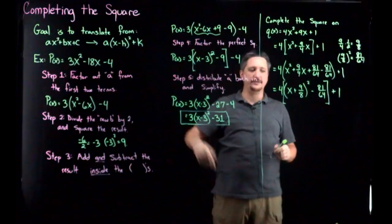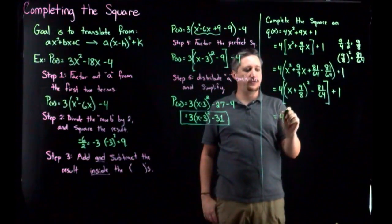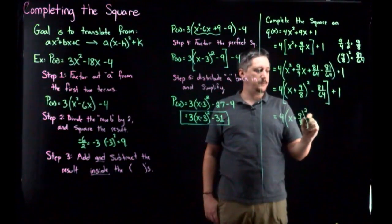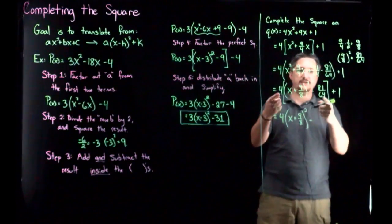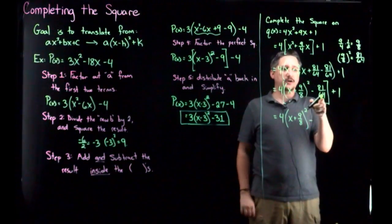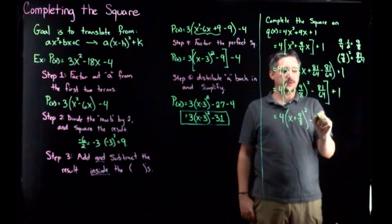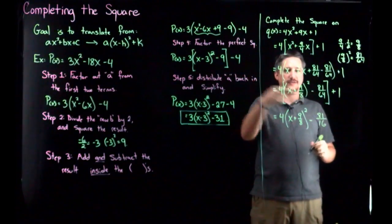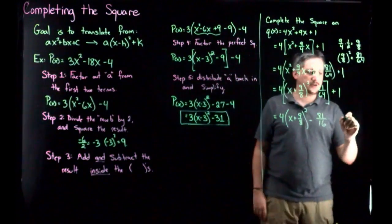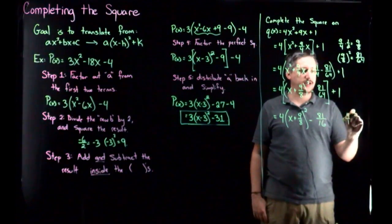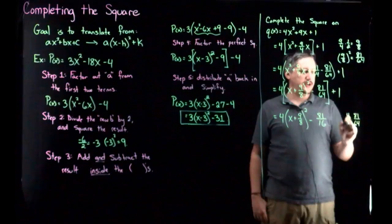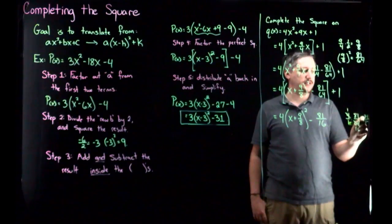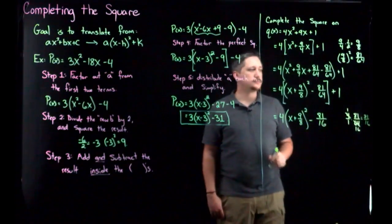So I have to distribute the four back in and simplify. So I'm going to get four times (x plus nine eighths) quantity squared minus, so four times this. Usually if it's a fraction there'll be some cancellation. So four can cancel a four in the bottom here. So I'm actually going to get 81 over 16. So that's doing the four over one times this and canceling. So I'll write it off to the side here. So it'll be four over one times 81 over 64. And then four goes into 64. And so I get 81 over 16. Plus one.